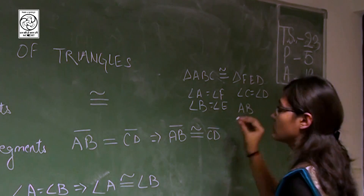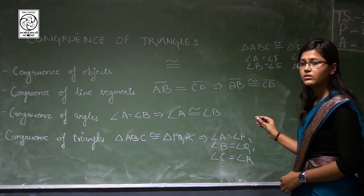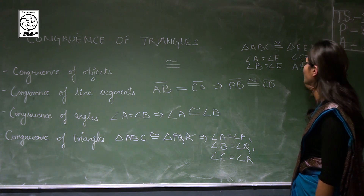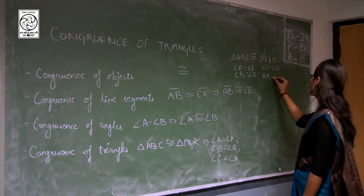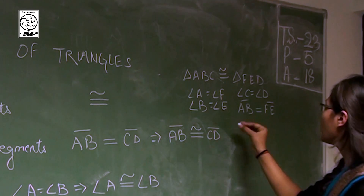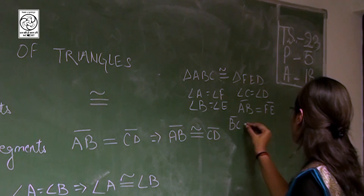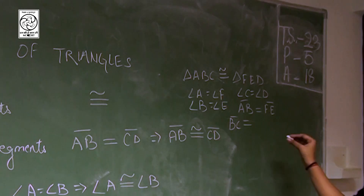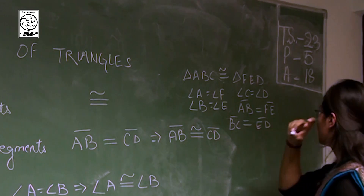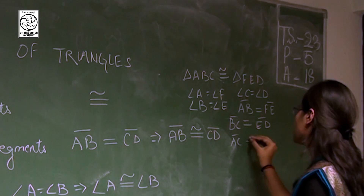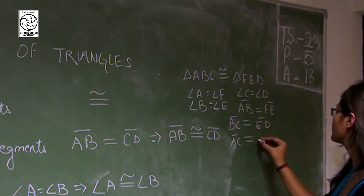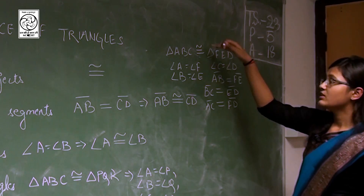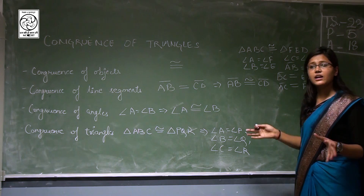And the corresponding sides are also equal: AB is congruent to FE, BC is congruent to ED, and AC is congruent to FD. So when a triangle congruence is written, it means the corresponding sides and angles of the triangles are equal.